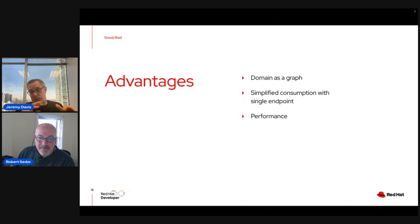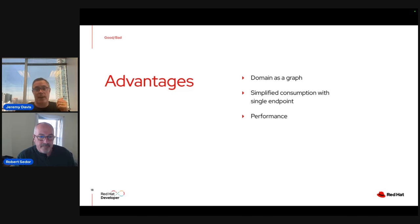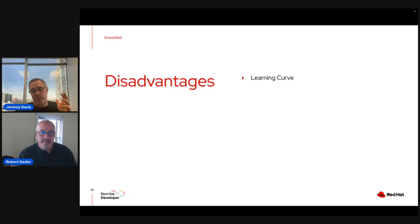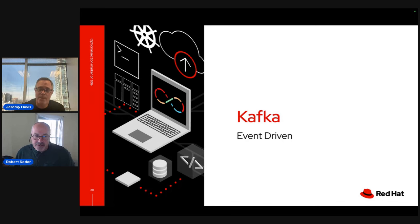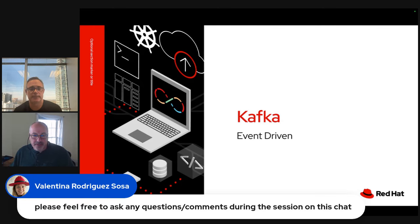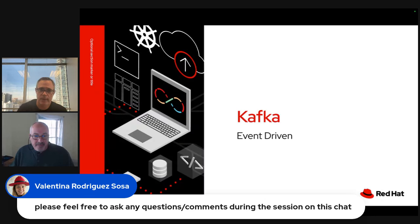Your domain gets exposed as a graph you can pretty easily consume over a single endpoint — it's a great choice for implementing APIs where people are querying your domain. Performance, while maybe not as fast as gRPC, certainly helps because you're tailoring the amount of data coming back over the wire. There is a learning curve. Consider gzipping your JSON encoding for better performance, and be careful of creating chatty behavior by allowing too many types of queries.